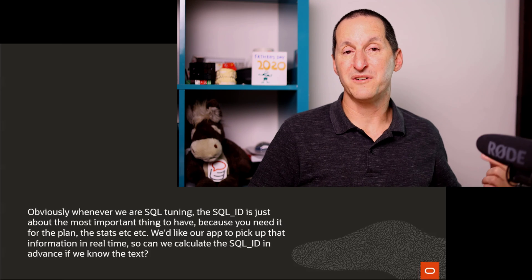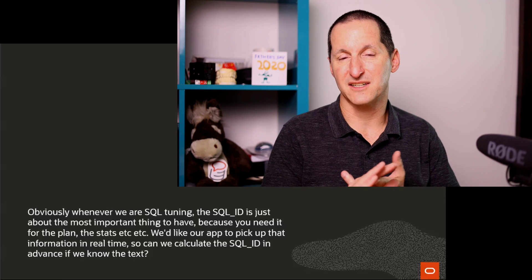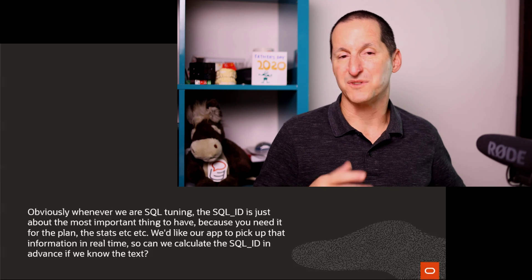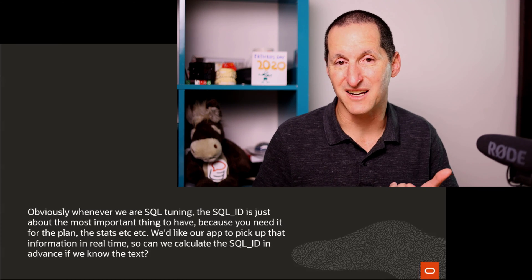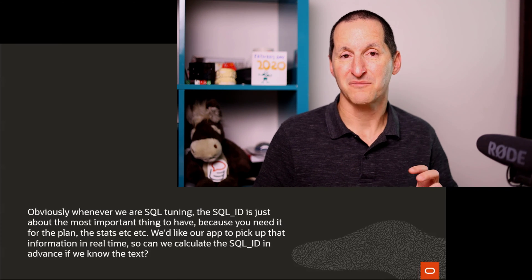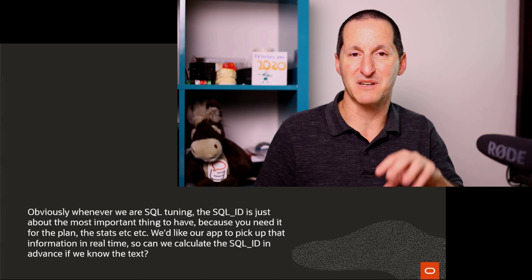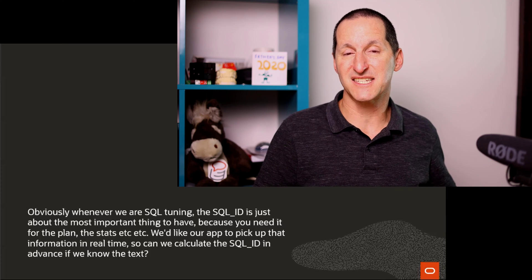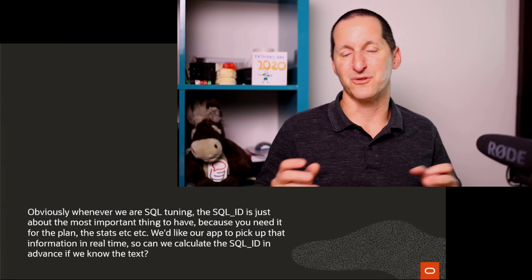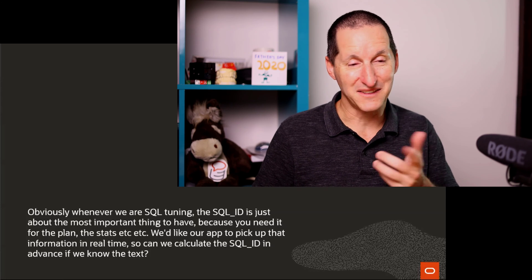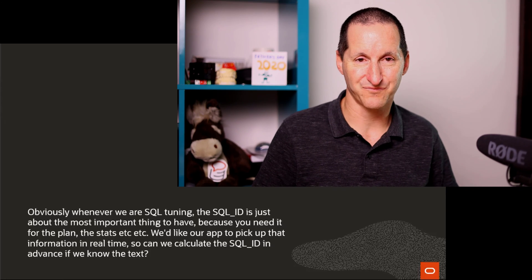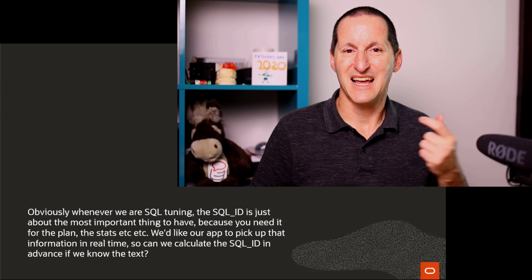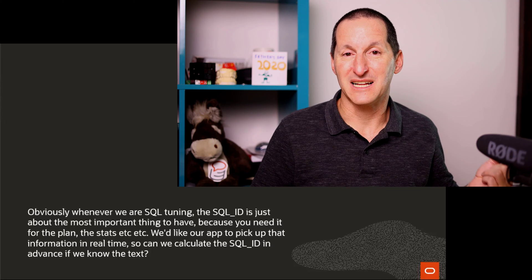Go query things like V$SQL_STATS, V$SQL, to find out what the buffer gets were, what the disk reads were, what the parsing time was, etc. So they can actually capture some performance metrics in real time in the application itself, not doing things like separate tracing. So I think it's a very cool little idea. The question is, if you have a piece of SQL text, how do you know what the SQL ID is?